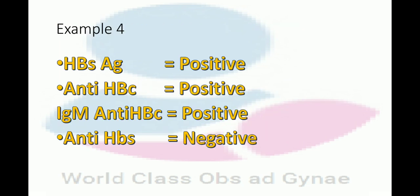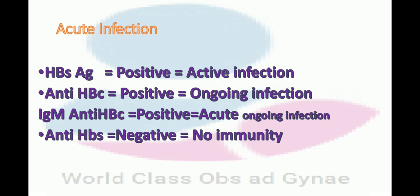Example four: HBs antigen positive, anti-HBc positive, IgM anti-HBc positive, anti-HBs negative. The answer is acute infection. HBs antigen positive means active infection. Anti-HBc positive means ongoing infection. IgM anti-HBc positive means acute ongoing infection. Anti-HBs negative means no immunity. So it is acute infection with no immunity.